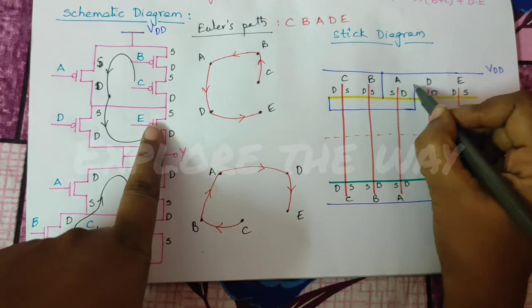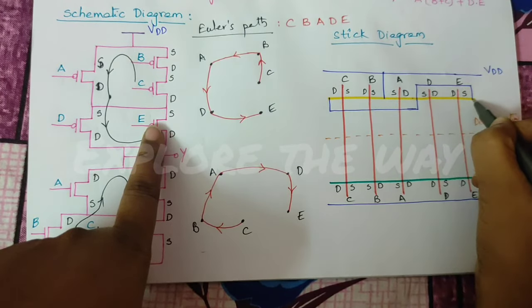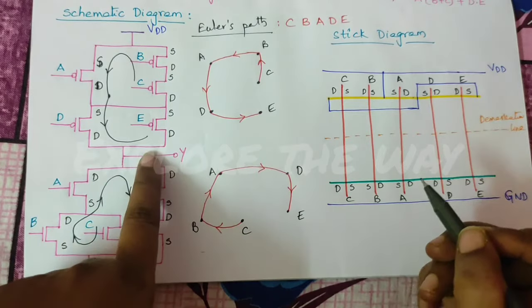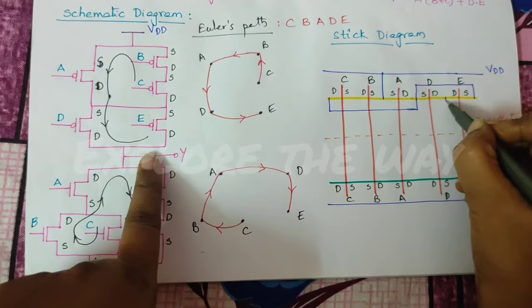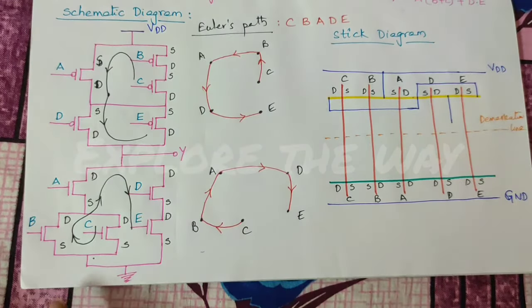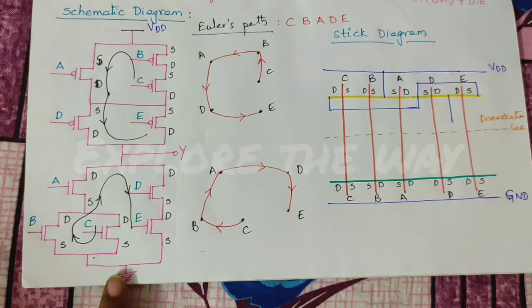Next, drains of D, E are taken output. Coming to pull-down network.